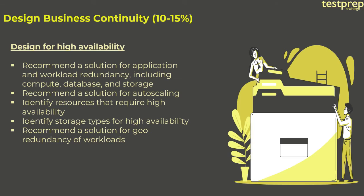Number two: Design for High Availability, divided into five parts — recommend a solution for application and workload redundancy including compute, database, and storage; recommend a solution for auto-scaling; identify resources that require high availability; identify storage types for high availability; recommend a solution for geo-redundancy of workloads.